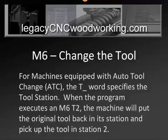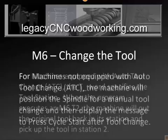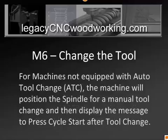For machines equipped with auto tool change — ATC — the T specifies a tool station. So when the program executes like M6 T2, it's going to put the original tool away in its station and go to station number two and grab the tool. So it's actually not a tool number, it's a station number. And that's important to understand with auto tool change.